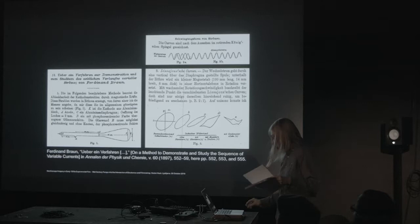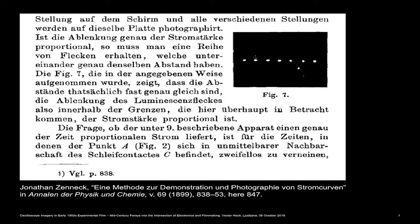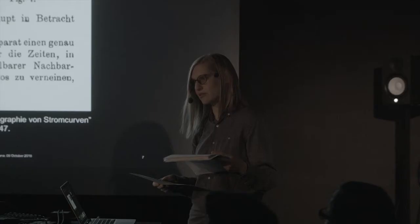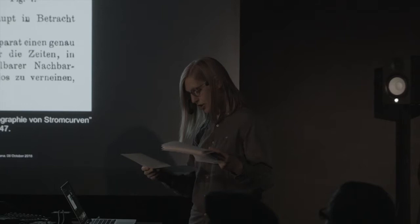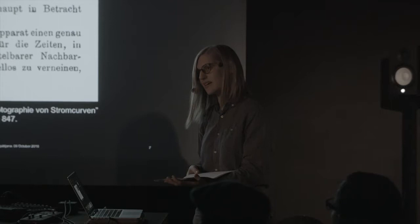Two years later, his assistant Jonathan Zeneck — so now we are in 1899 — shifted this principle of the external mirror by adding a second pair of coils to deflect the beam horizontally. That is the sawtooth signal he applied, and the sweeping, which is very fundamental to how oscilloscopes still work today. This solution proved to be very elegant, and this electronic process — which involves no mechanical parts, no time lag, and no self-oscillations — is ideal for measuring and testing purposes because you get very accurate results.